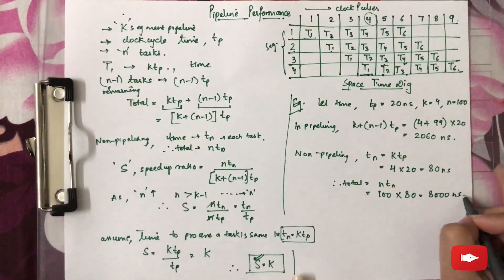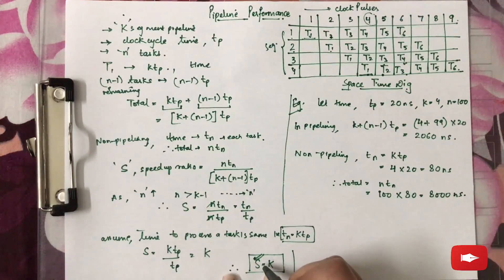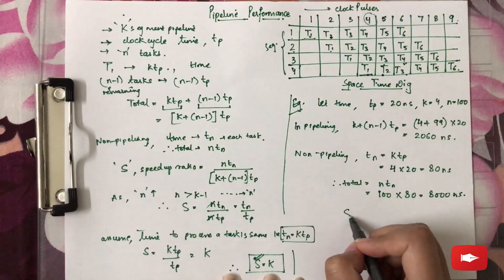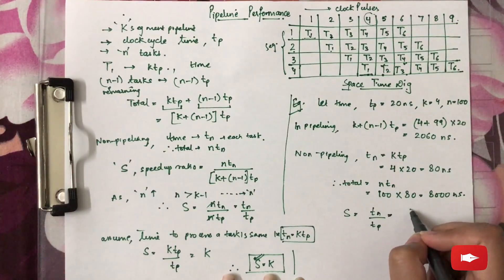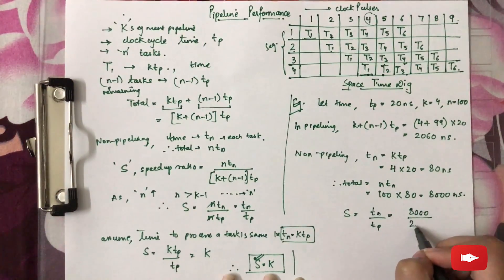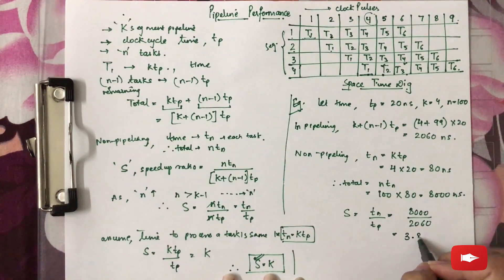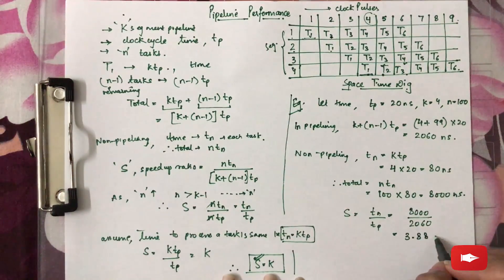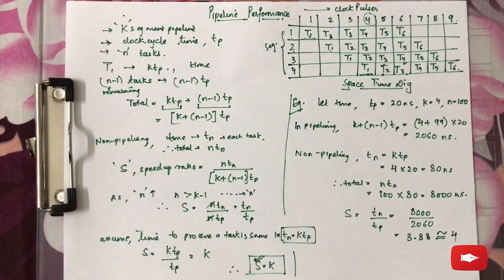Now from this, we know S equals TN upon TP, that is 8000 upon 2060, which will give an answer 3.80, which is approximately equal to 4.